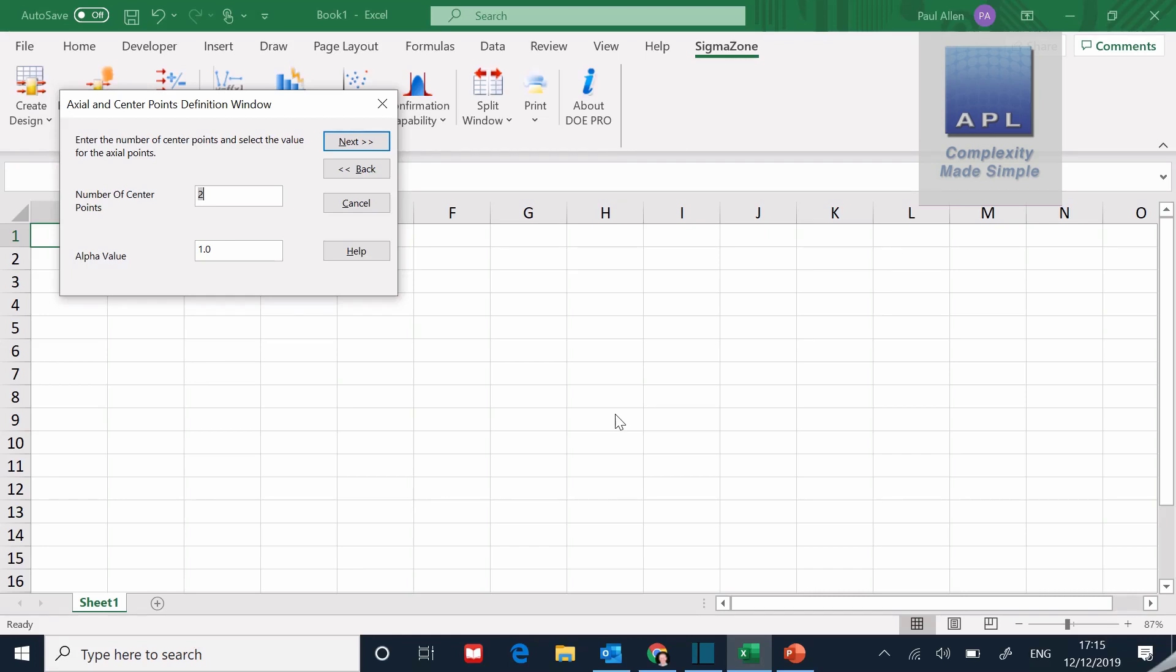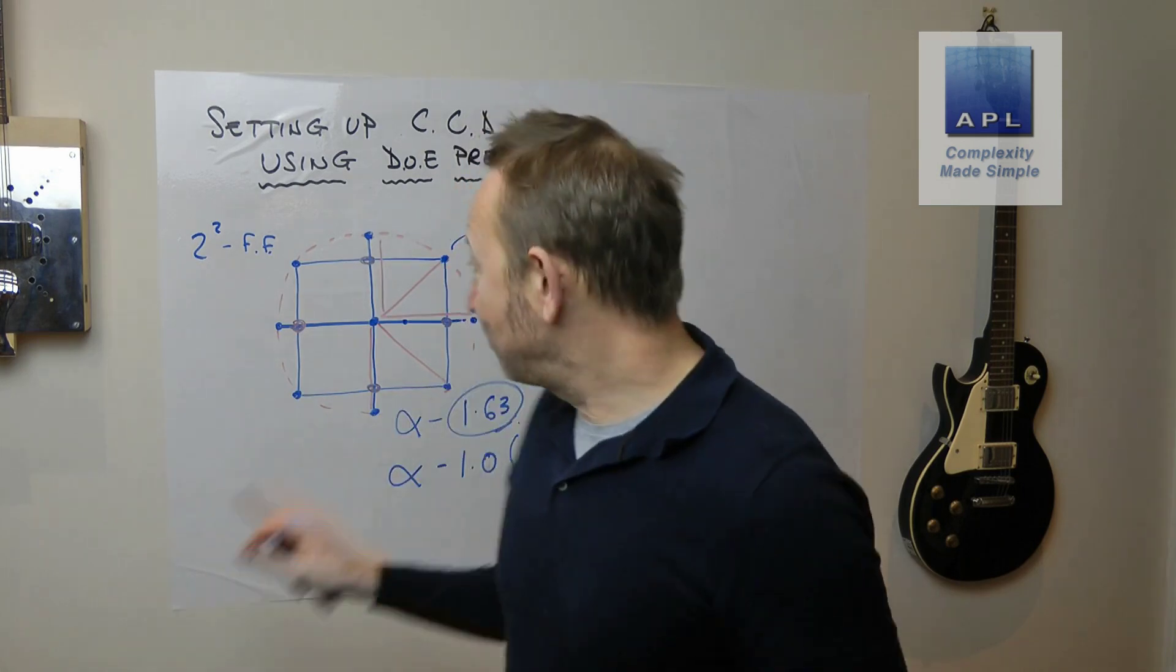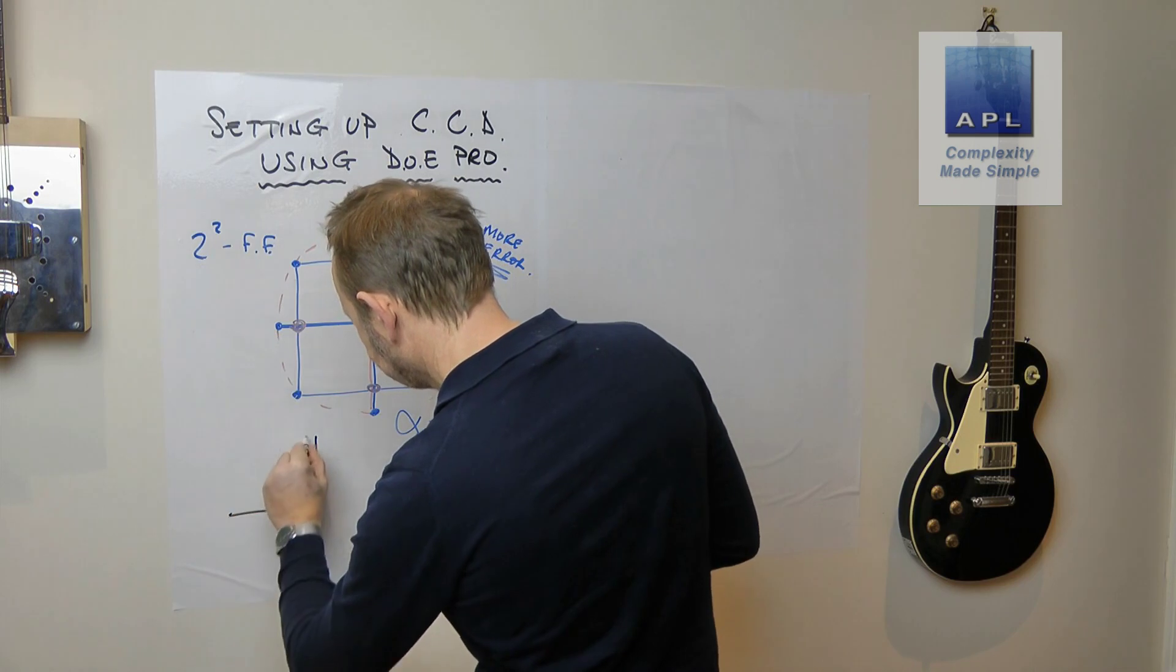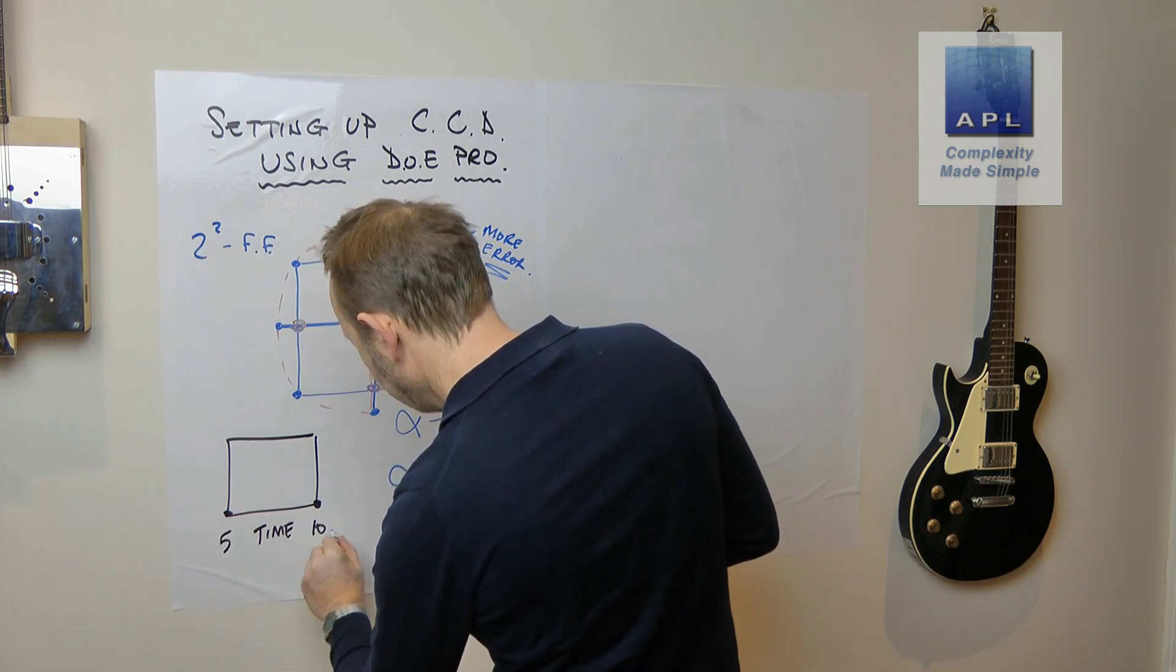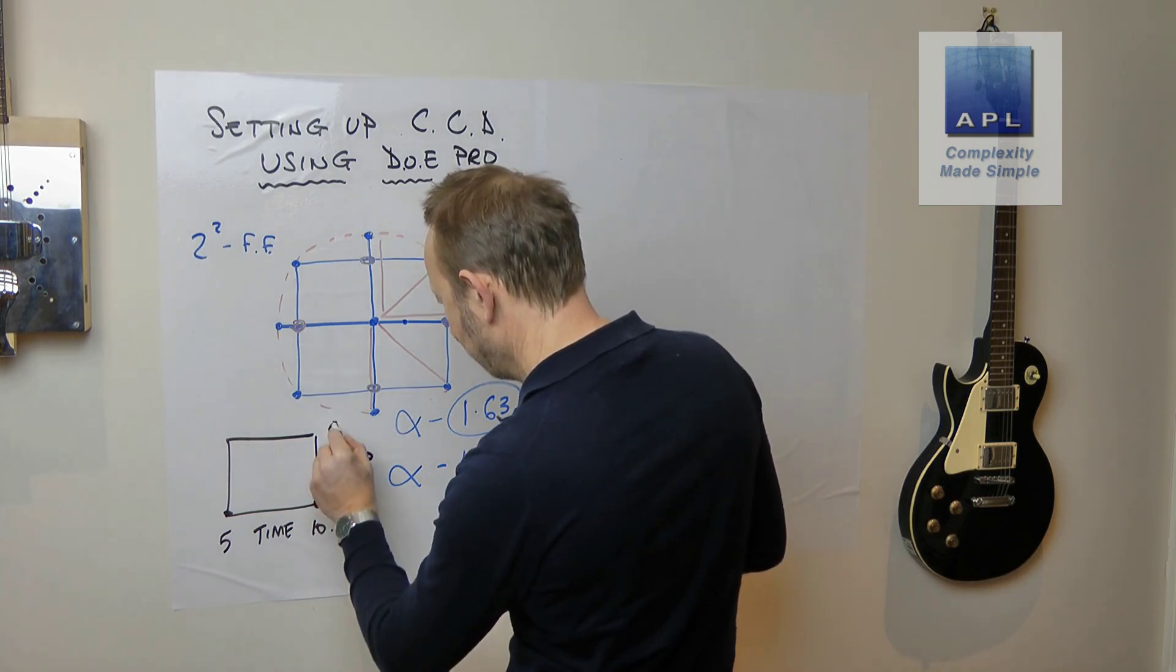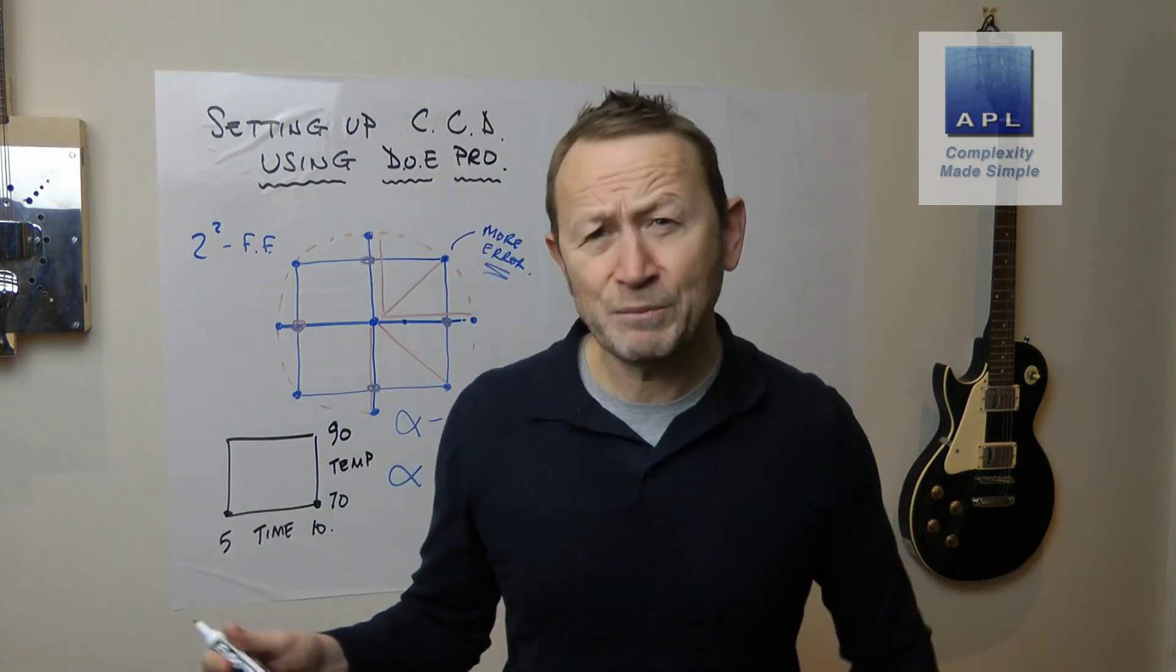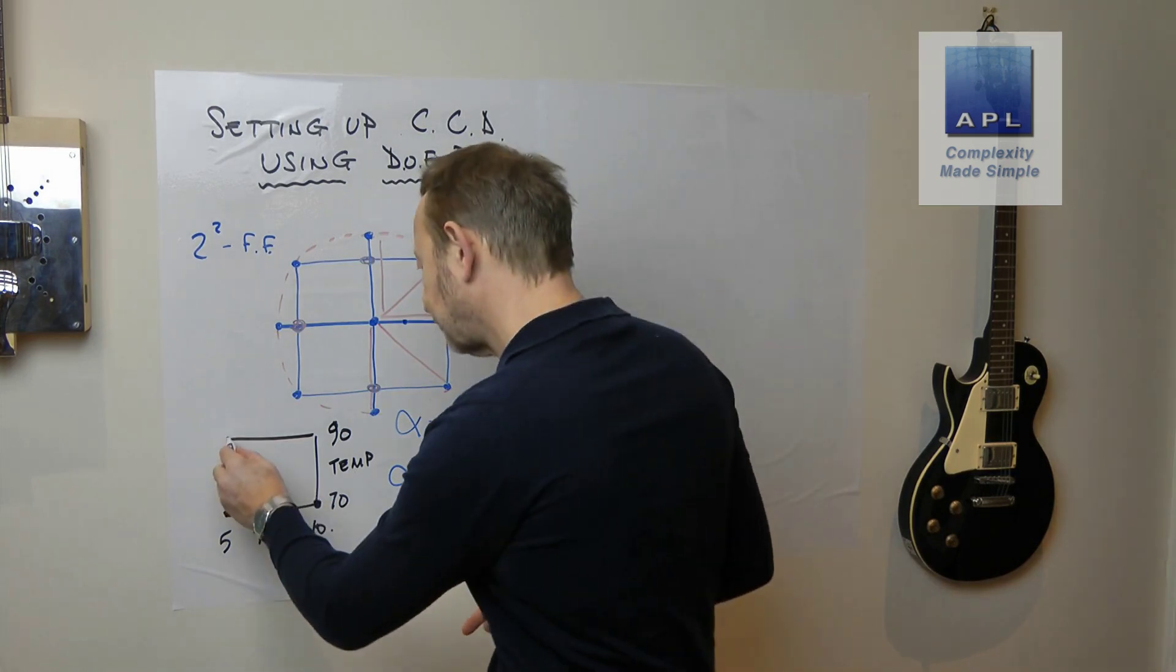Which of course violates the mathematical principle now of everything being equidistant from the center. But to be honest, that problem exists anyway, because if you are going to decide on a design space, so you are going to decide what the highs and the lows - so if this is time here and you've gone five and ten for the high and the low, and then this is temperature here and you've gone 70 and 90 - by the very fact that you've chosen five and ten and 70 and 90, those values in and of themselves might push the process so much more.